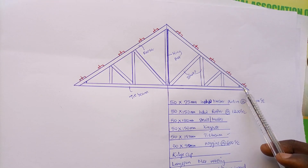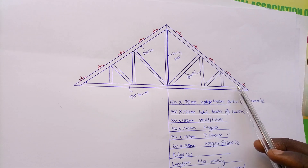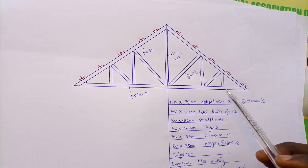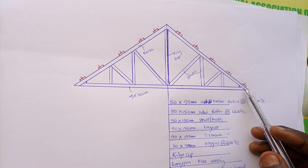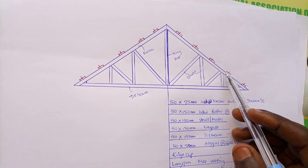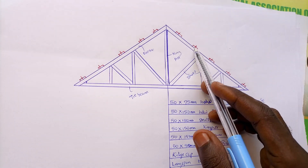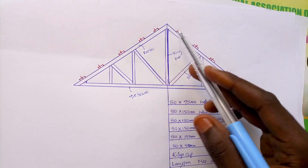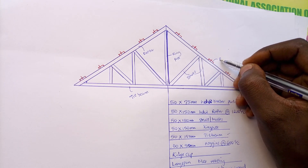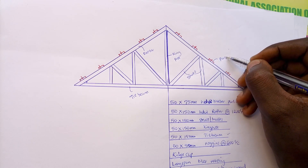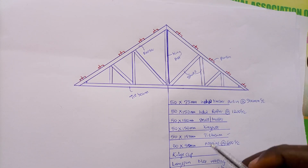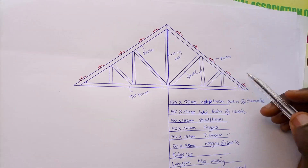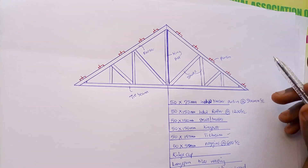There are two rafters in each truss, one king post in each truss, one tie beam, and there will always be two wall plates in each truss. Take note of that. The element I drew in red is called a purlin — I'll refer to it as a purlin for now.